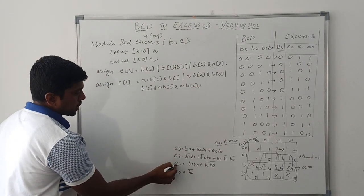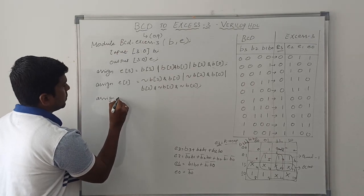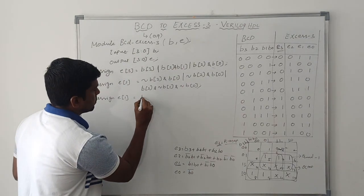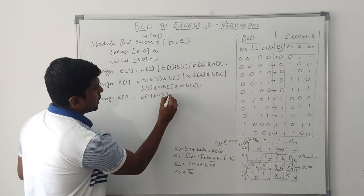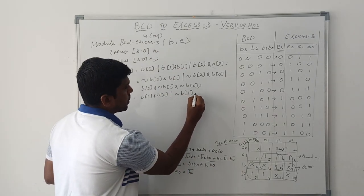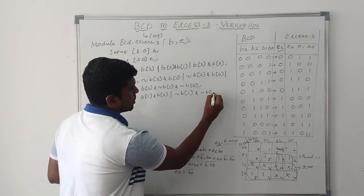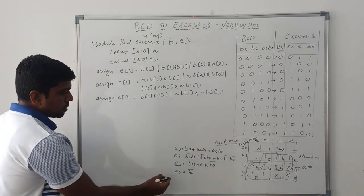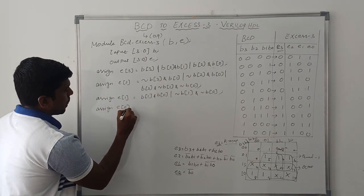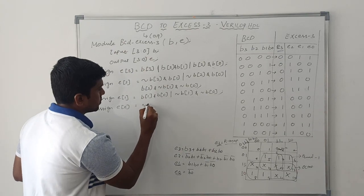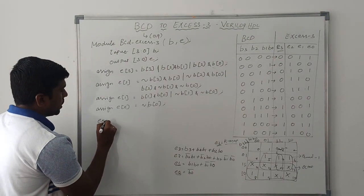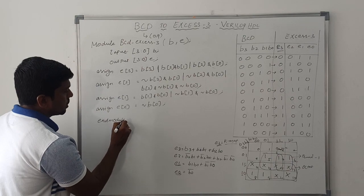Then come to the next boolean expression E1. Assign E[1] = (B[1] & B[0]) | (~B[1] & ~B[0]). Then the final expression E0: assign E[0] = ~B[0]. Finally close the module using the statement 'endmodule'.